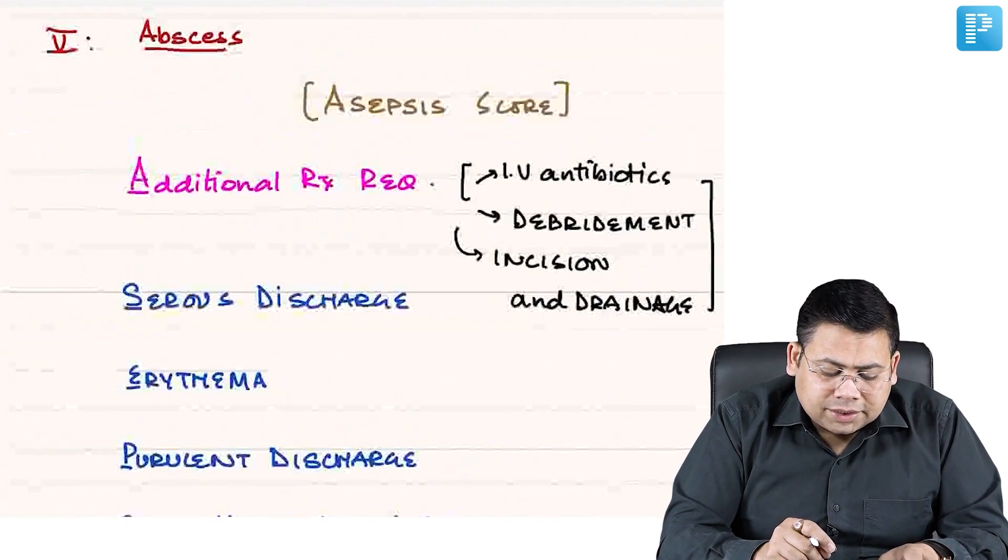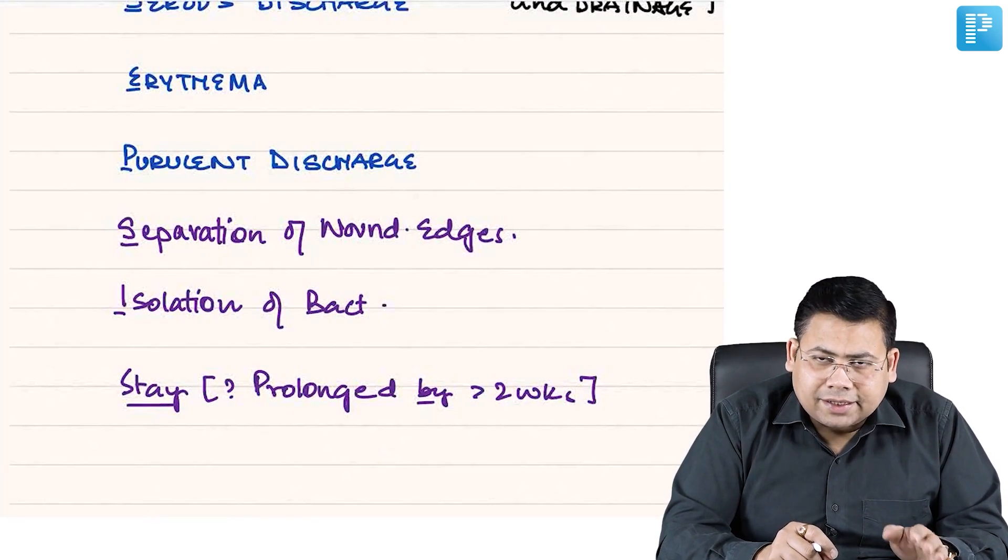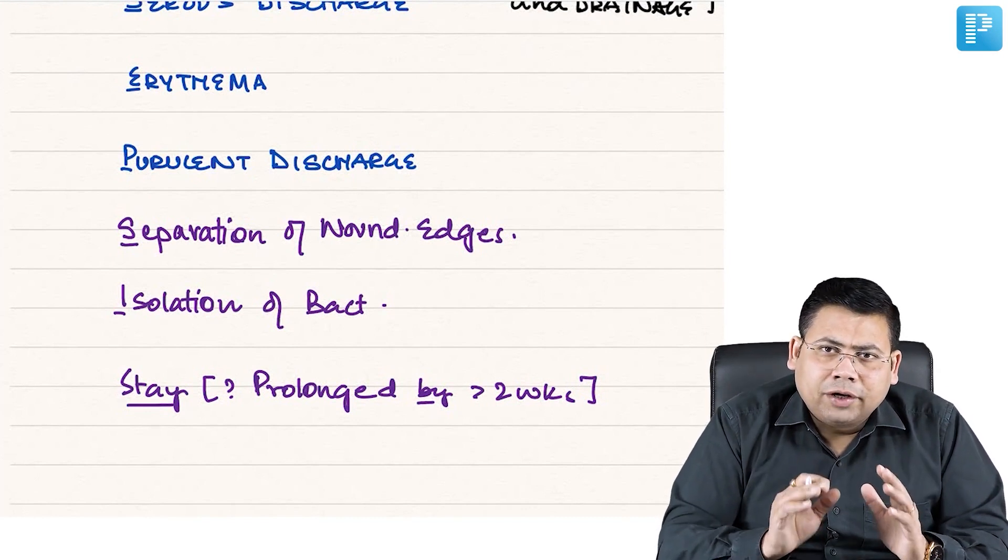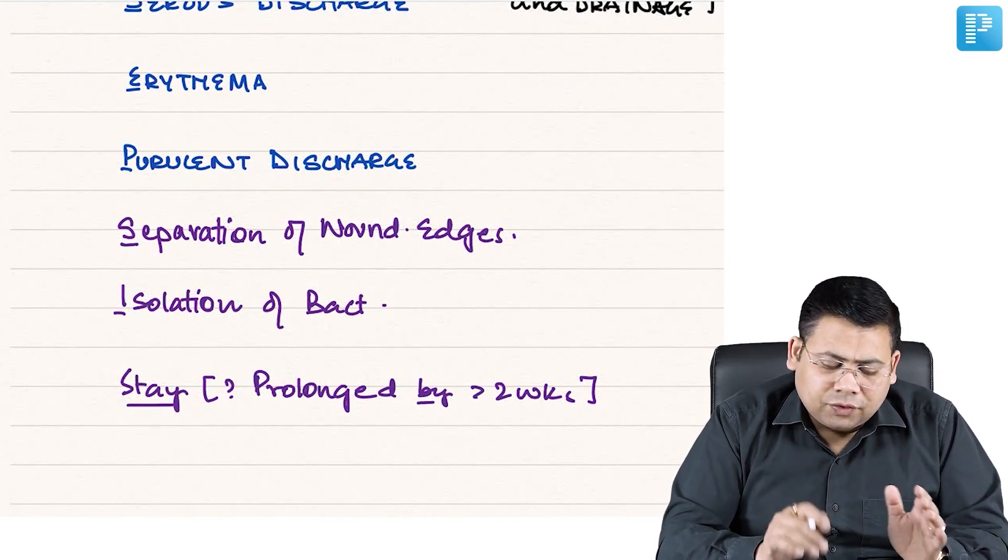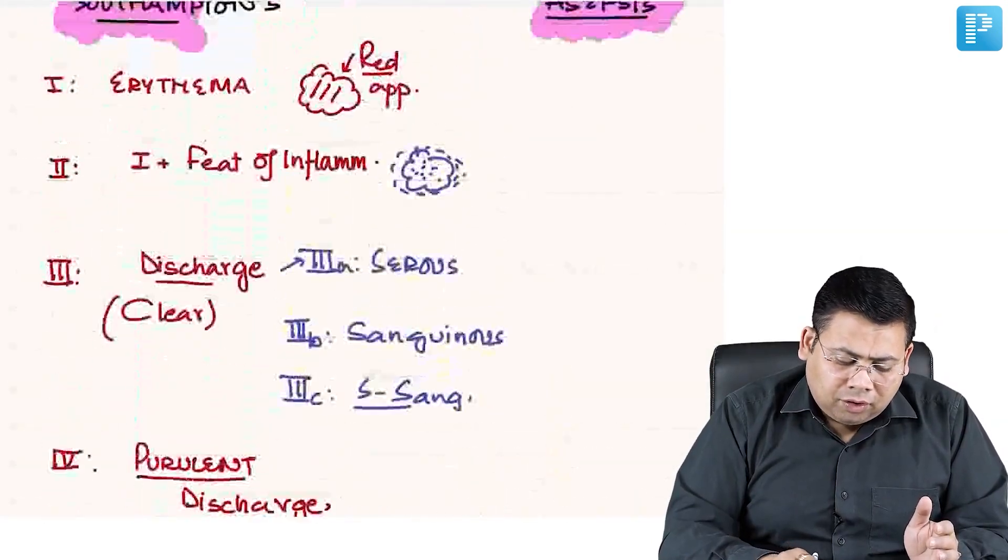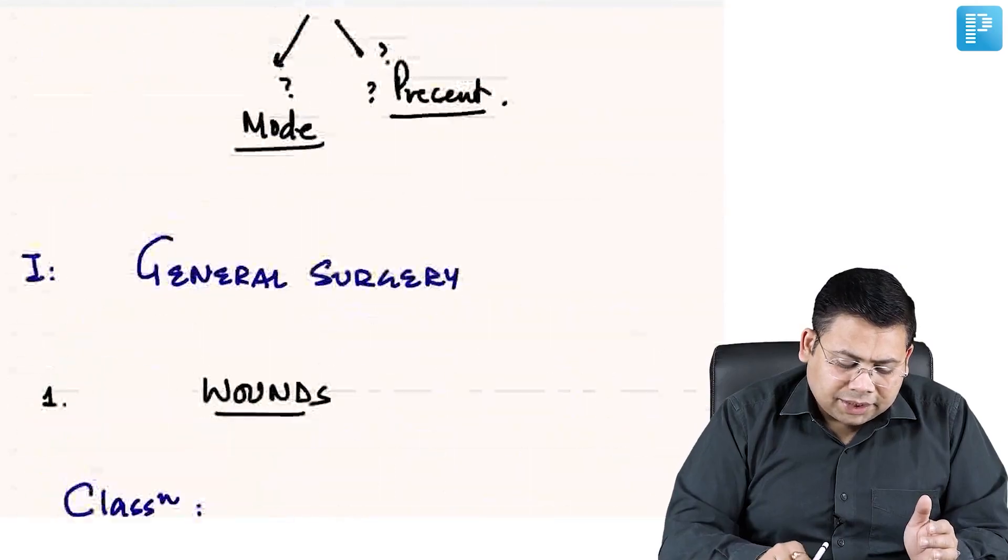So all these points - A, S, E, P, S, I, S - ASEPSIS. These are actually a point-based calculation system that we do for them. Next is, let us move forward now. So we have completed the chapter of wounds. We have completed the chapter wounds.